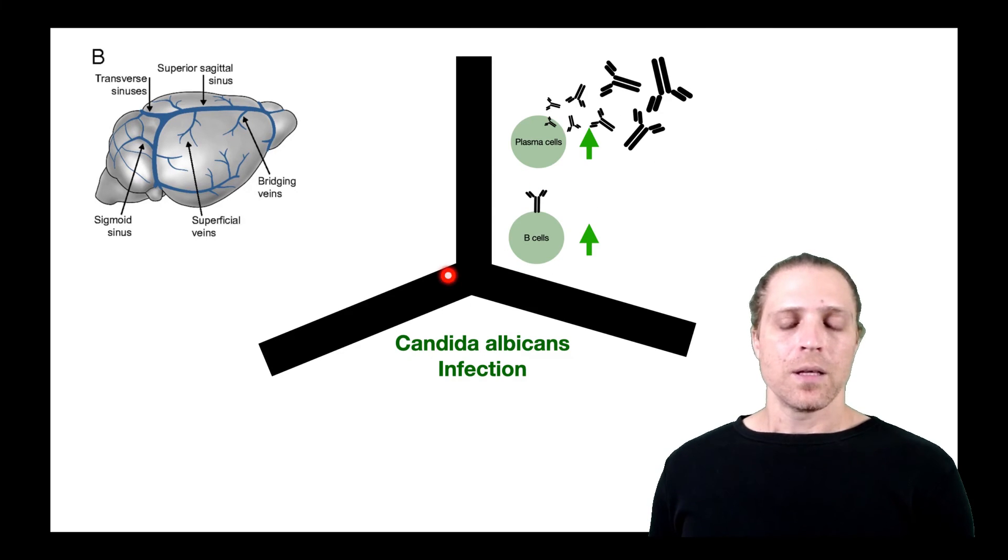And what the authors saw was that when mice were infected with Candida albicans, which is a common pathogen in the human gut, they saw that there was an increase in the presence of B cells as well as plasma cells in the sinuses of the meninges.